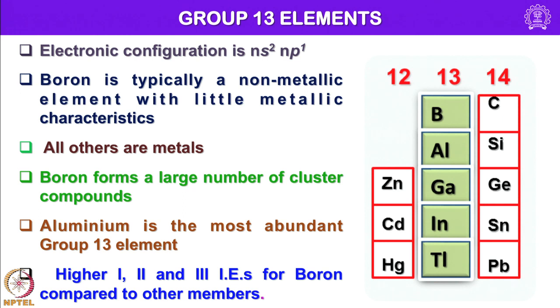I will be discussing structural aspects pertinent to boron hydrides using Wade's rules, and aluminum is the most abundant group 13 element in the earth's crust. All these group 13 elements show higher first, second, and third ionization energies for boron compared to other members. Boron behaves a little different than aluminum, gallium, indium, and thallium because of its smaller size and high charge when it goes to trivalent form.